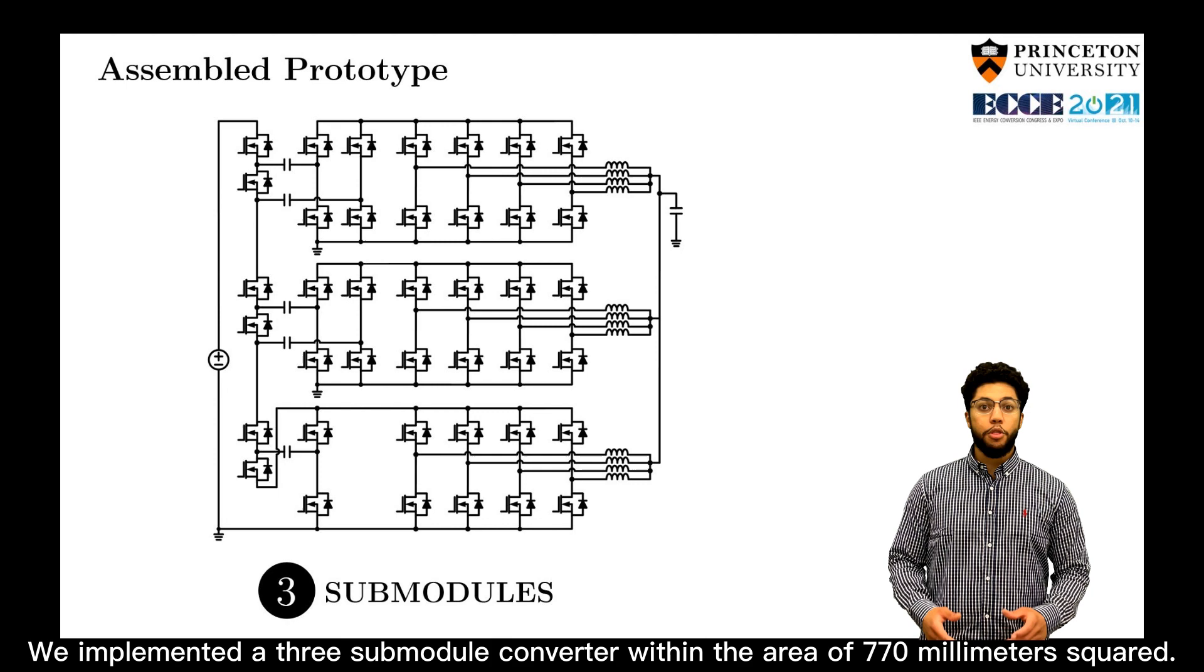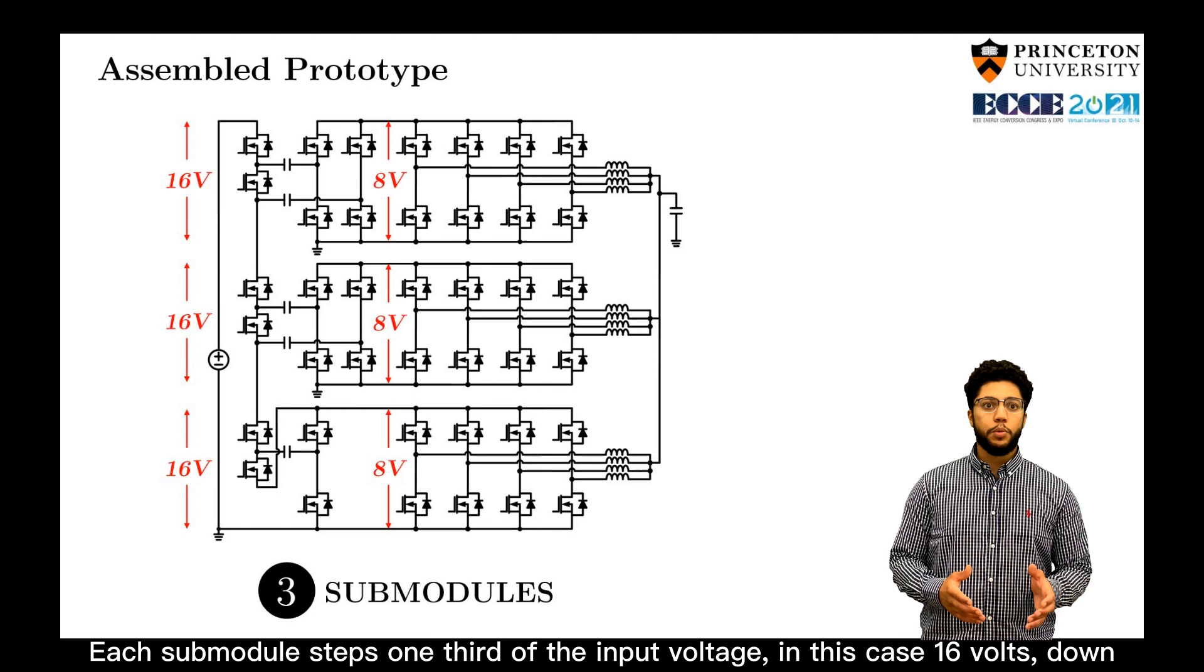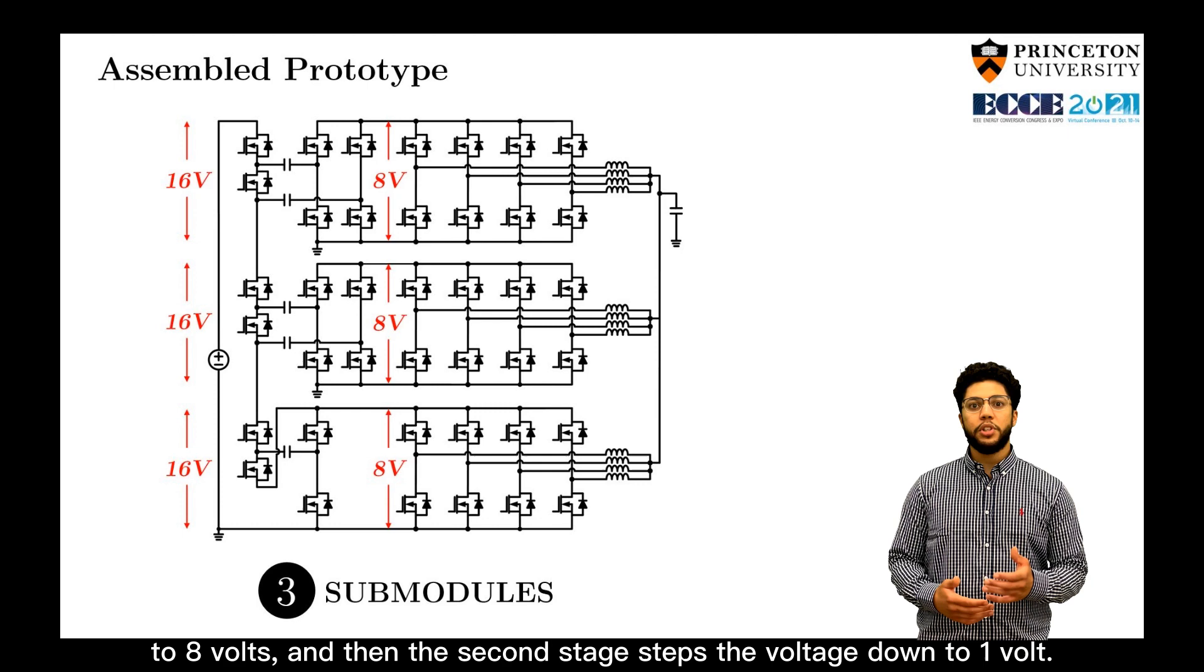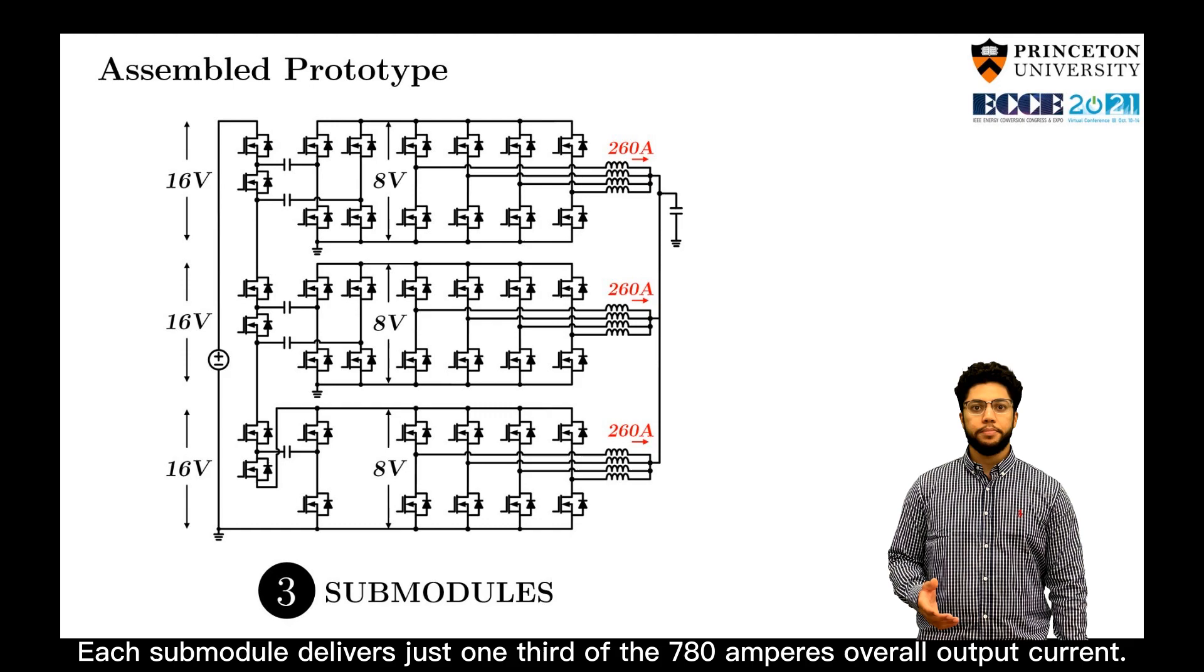We implemented a three-submodule converter within the area of 770 millimeters squared. Each submodule steps one-third of the input voltage, in this case 16 volts, down to eight volts, and then the second stage steps the voltage down to one volt, and each submodule delivers just one-third of the 780 amps overall output current.